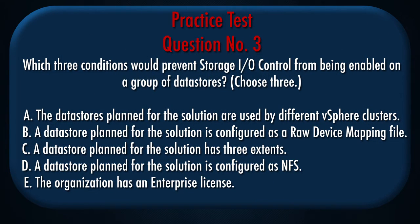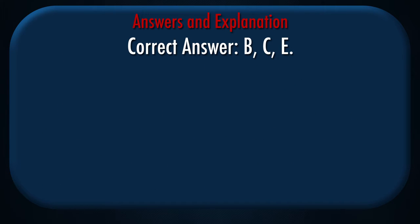Question number 3. Which three conditions would prevent Storage I/O Control from being enabled on a group of data stores? Choose three. A. The data stores planned for the solution are used by different vSphere clusters. B. A data store planned for the solution is configured as a raw device mapping file. C. A data store planned for the solution has three extents. D. A data store planned for the solution is configured as NFS. E. The organization has an enterprise license. Correct answer: B, C, E.